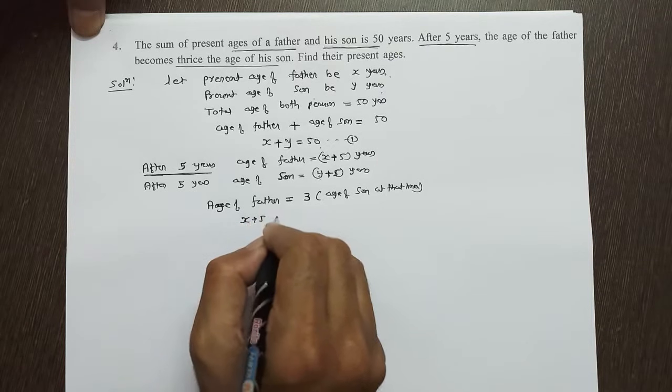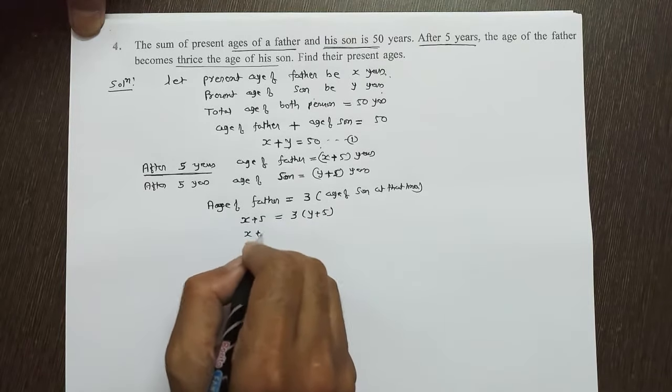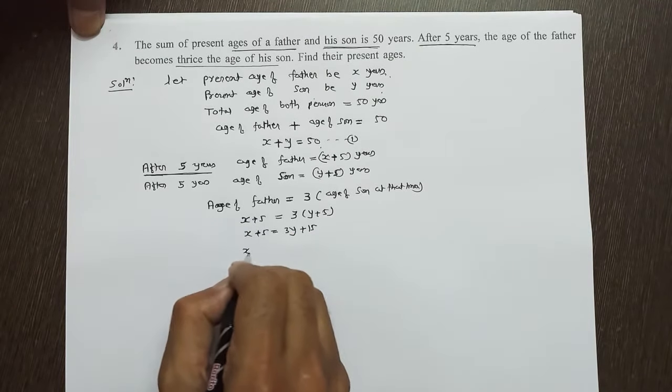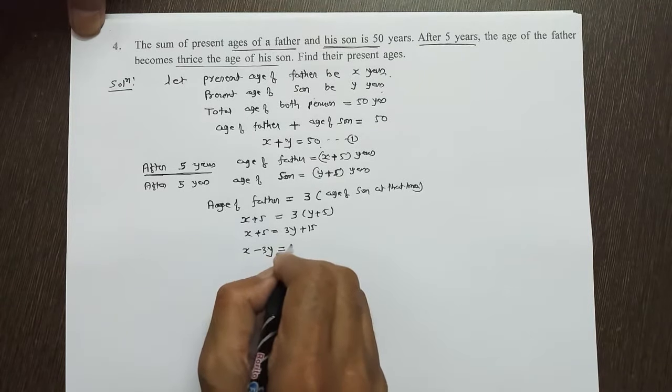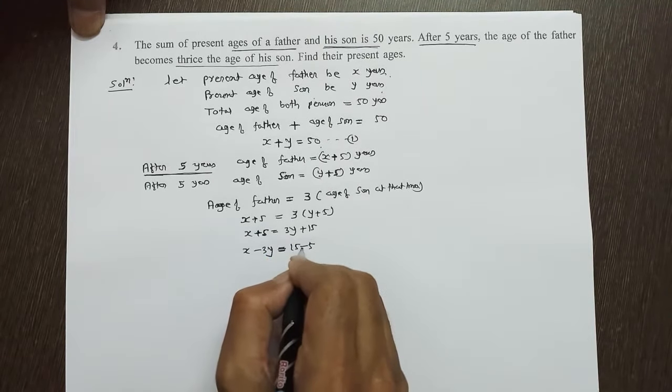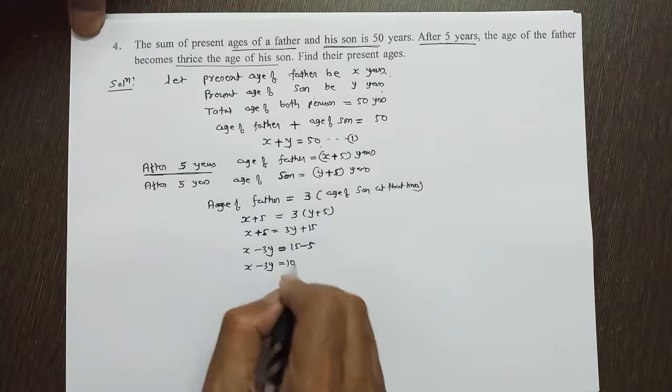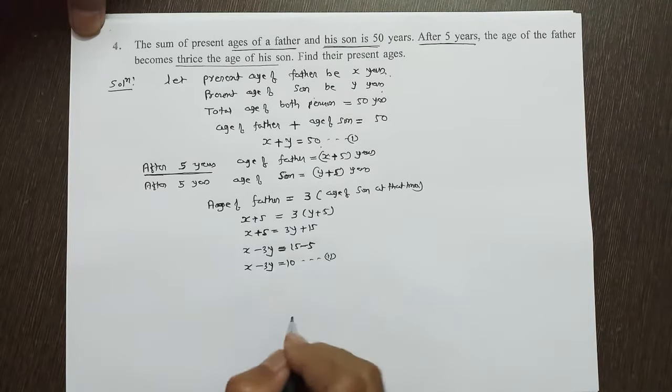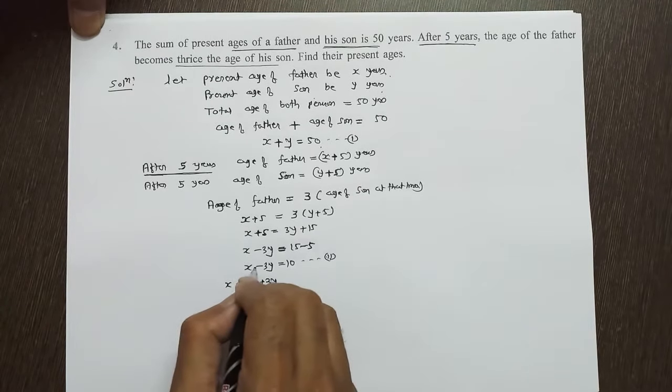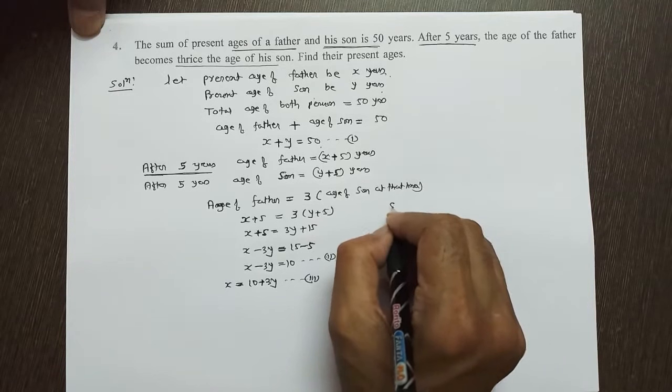So X plus 5 equal to 3 into Y plus 5. X plus 5 equal to 3 into Y, 3Y plus 15. X minus 3Y equal to 15 minus 5, equal to 10. This is equation number 2.